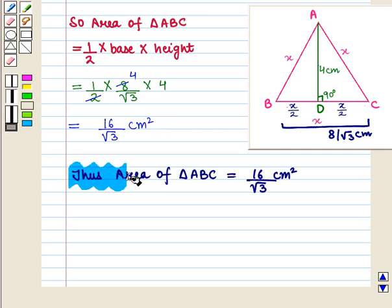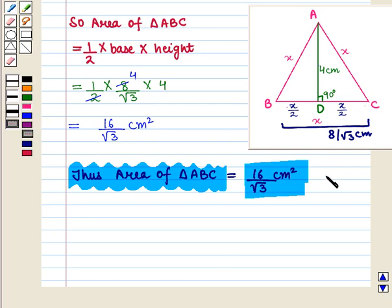Thus we say that area of triangle ABC is equal to 16 upon square root of 3 cm squared, which is the required answer. This completes our session. Hope you enjoyed this session.